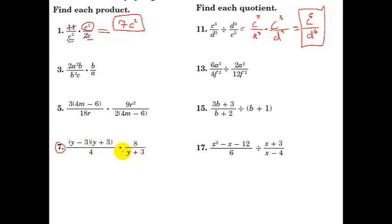Let's skip down to something a little more challenging. Let's try number 7. So this is multiplication. So the first thing you want to notice is that you've got this y plus 3 here in parentheses, and you've got this y plus 3 here as all one piece.